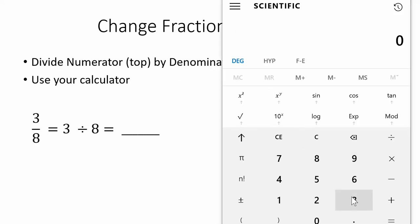So get out your calculator and divide 3 divided by 8 equals 0.375. This shows us that the fraction 3 eighths is equal to the decimal 0.375.